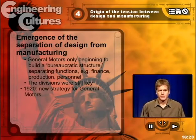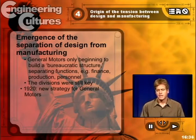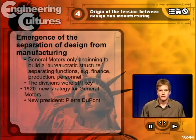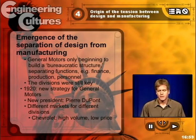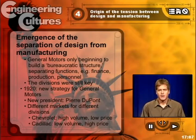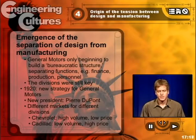GM was having difficulty, and by 1920 it was necessary to take some new steps to reorganize. They did so by instituting a new president by the name of Pierre Dupont. He introduced a new corporate model for the divisions, where different divisions would aim for different markets. The idea was to have the Chevrolet be a high-volume, low-priced vehicle and the Cadillac on the other end being a low-volume, high-priced vehicle — sorting out the market in ways that would appeal to people with different levels of income. This was in sharp contrast with the Ford strategy that treated the masses as a whole.